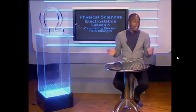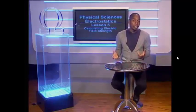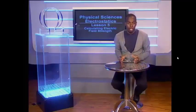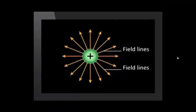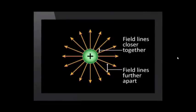Hello grade 11s. In our last lesson we learnt about electric fields. An electric field exists around any charged object. This diagram shows the electric field around a positive charge. The strength of the electric field is represented by how far apart the electric field lines are. You can see that close to the charge the field lines are closer together, however further away from the charge the field lines are further apart and the strength of the electric field decreases.